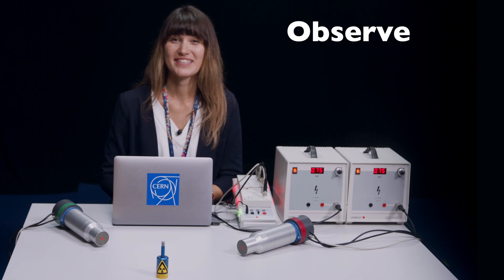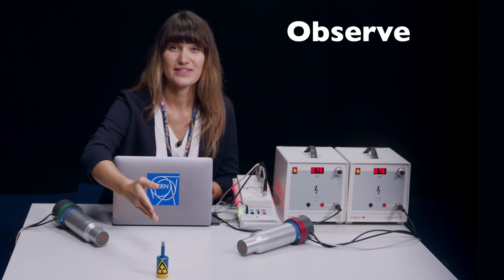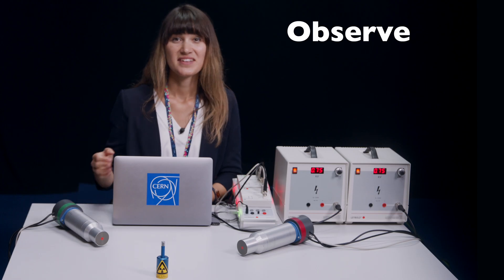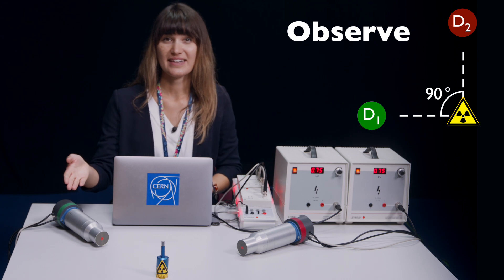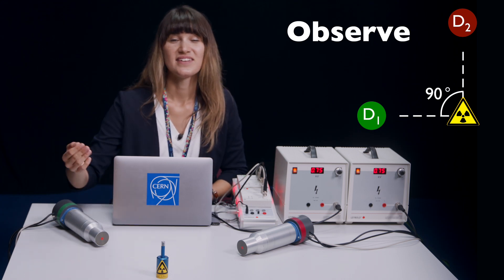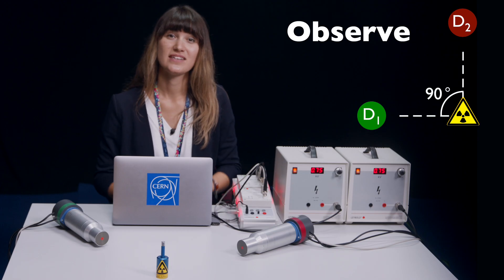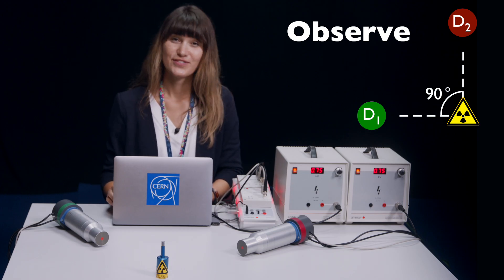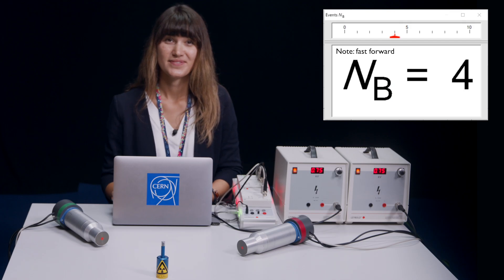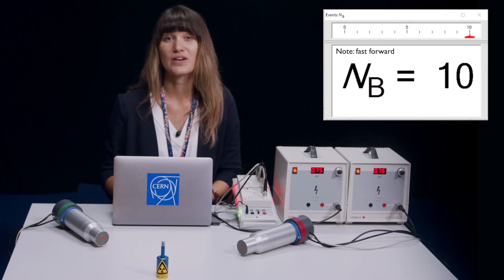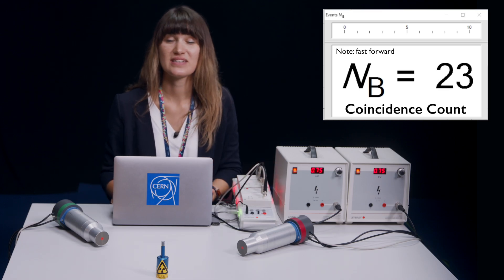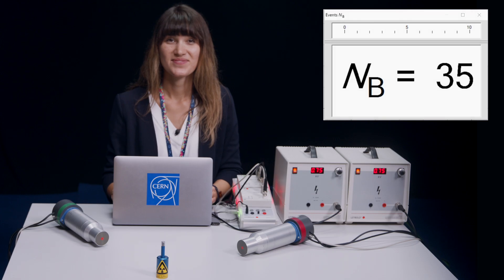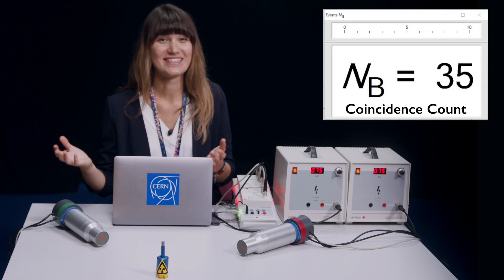Did you make a prediction? Great! Now let's make an observation. We have the radioactive source here and one detector here. Additionally, I have placed the second detector at 90 degrees angle to the first detector and the radioactive source. Now I start the measurement with the software in coincidence mode and I let it run for 100 seconds. The output diagram shows the coincidence count — that means how often both detectors measure the photon at the same time. Our measurement is over and this is our result.